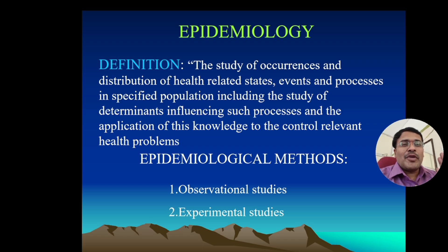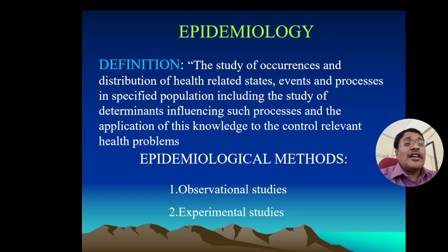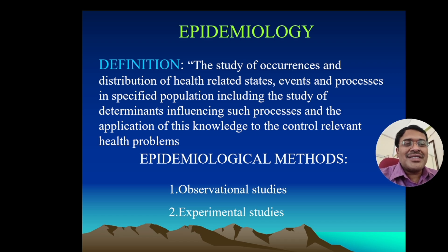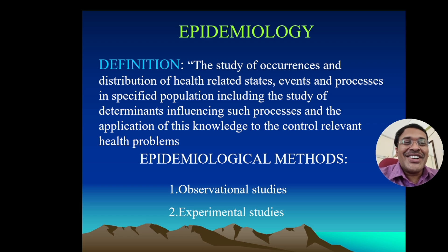So to summarize, the full definition is: 'The study of occurrence and distribution of health-related states, events, and processes in a specified population, including the study of determinants influencing such processes, and the application of this knowledge to the control of relevant health problems.' Memorize it and recite it as soon as you get up in the morning. Now let's go into descriptive epidemiology.